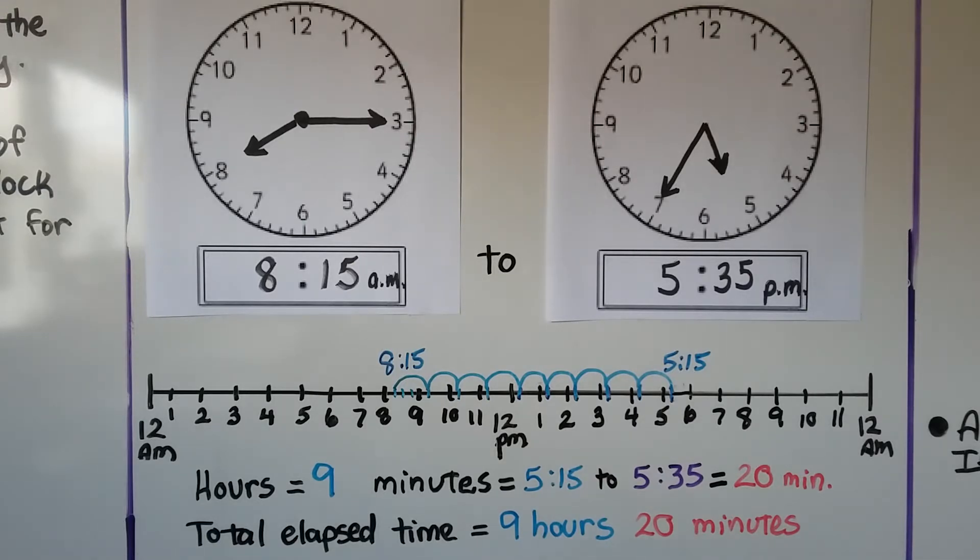So we can make a number line for the clock. Here's 12 a.m., that's midnight. Then we put all the hours. Here's 12 p.m., that's noon, and then we go back to 12 a.m. So here's 8 o'clock in the morning and we have little increments here for 8:15, 8:30, and 8:45, splitting the clock into four parts.